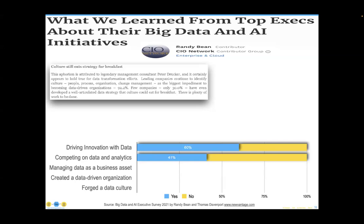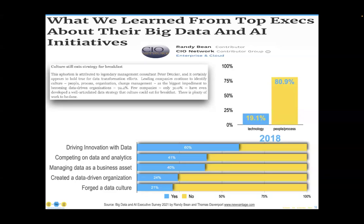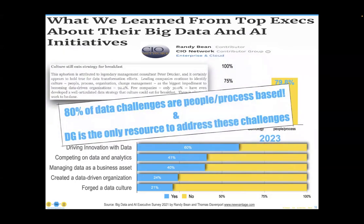Here's a survey from Randy Bean. This is the first time in a long time that we've actually had more people driving innovation with data than not — that's good. But 41 percent of the thousands of companies surveyed are competing on analytics, 40 percent are managing data as a business asset, one in four are creating a data-driven culture, and one in five have forged a data-driven culture. Most importantly, year after year since 2019, the Pareto analysis shows 80 percent of data problems are people and process focused, not technology focused.